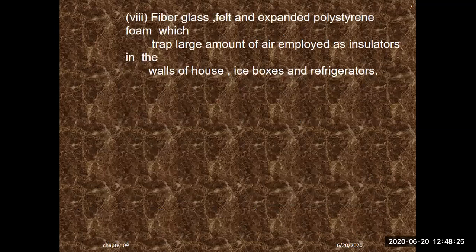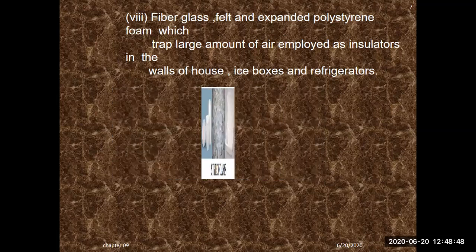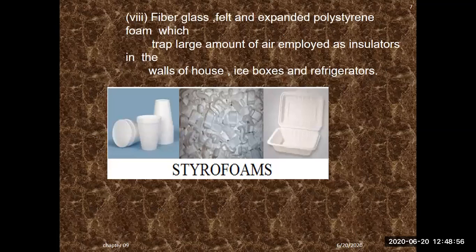Fiberglass, felt, and expanded polystyrene foam, which trap large amounts of air, are applied as insulators in the walls of houses. Iceboxes and refrigerators are also insulator-type objects that stop the flow of heat from inner to outer or outer to inner sides — styrofoam is used for this. With this, our class ends. I hope you have enjoyed and understood it. Thank you very much for your attention.